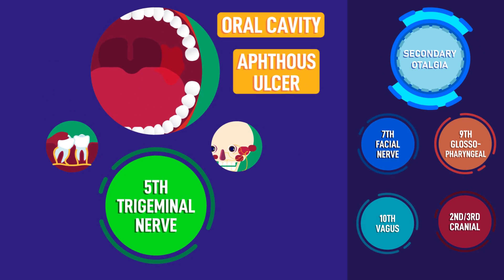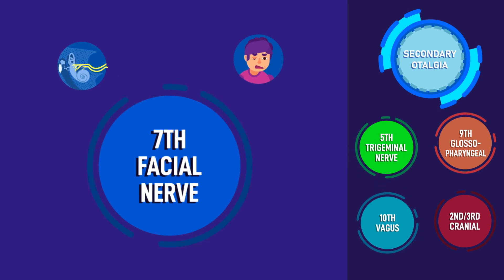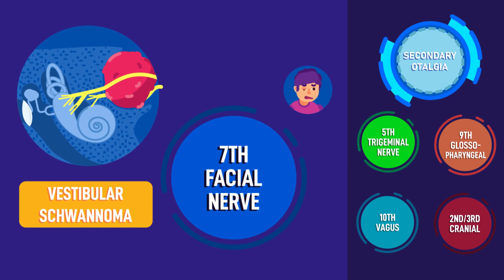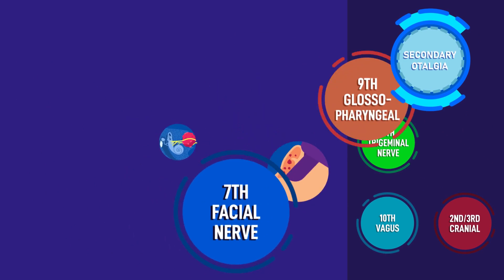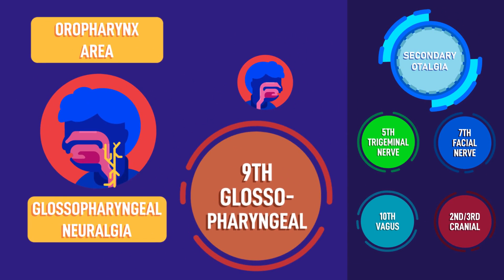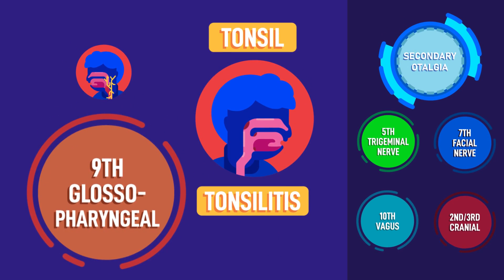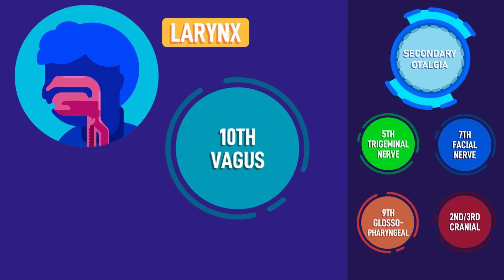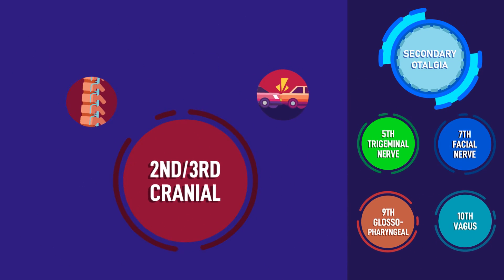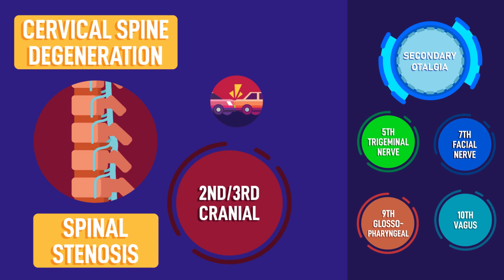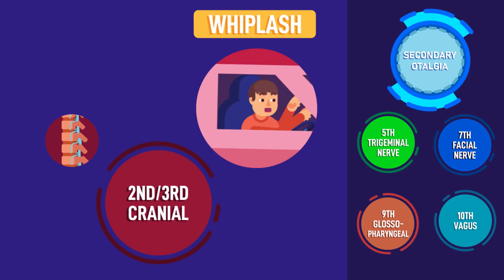The seventh or facial nerve carries pain to the ear from vestibular schwannoma and herpes zoster infection. The ninth or glossopharyngeal nerve carries pain from the oropharynx and tonsil area. The tenth or vagus nerve carries pain to the ear from the hypopharynx and larynx area. The second or third cervical nerves carry pain to the ear from cervical spine degenerative disease as well as whiplash trauma to the spine.